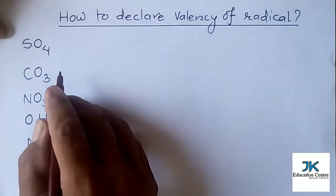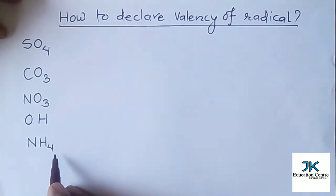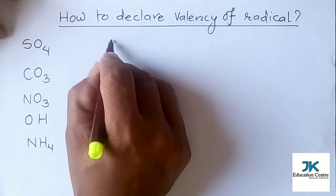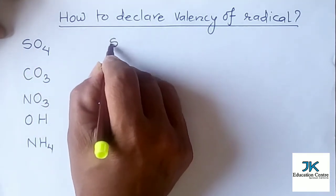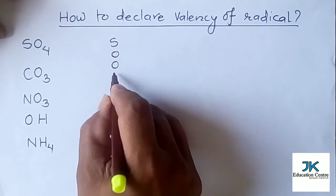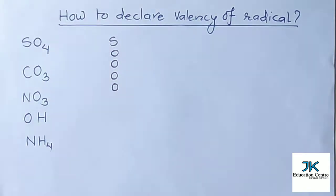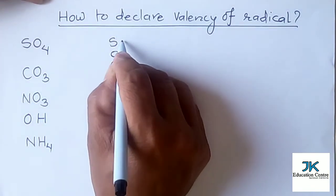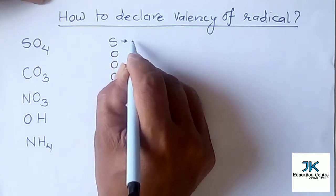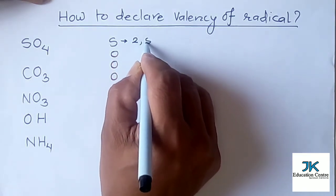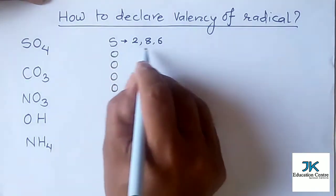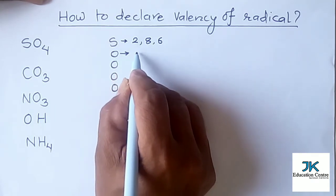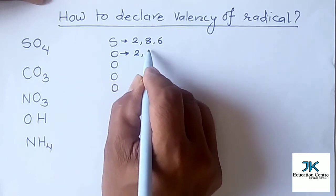We all know that the valency of sulfate is two, but let's understand why. Sulfate has sulfur and four oxygen atoms. Sulfur has atomic number 16, so its electronic configuration is: first orbit holds 2 electrons, second orbit holds 8, and the third orbit holds 6 electrons — all together 16. Oxygen has atomic number 8, so its first orbit holds 2 and the second orbit holds 6.